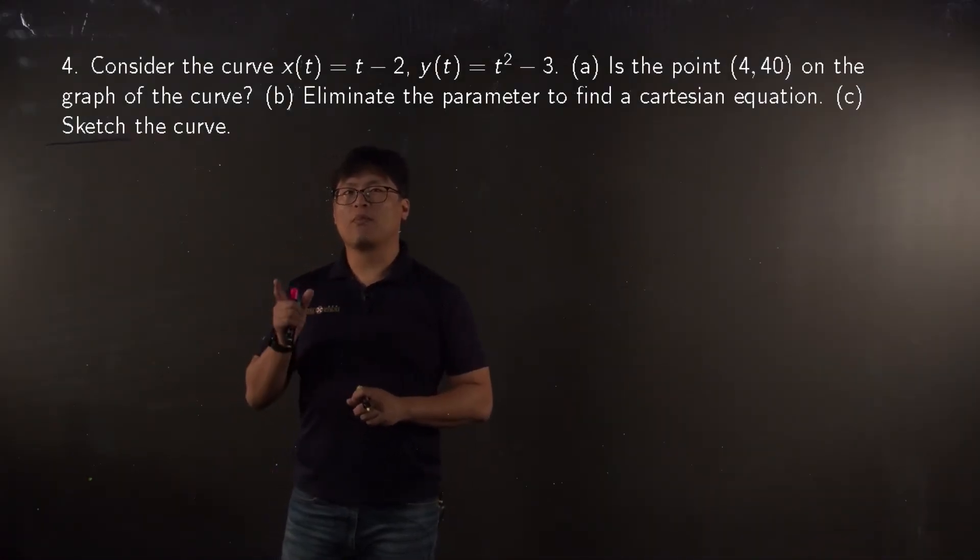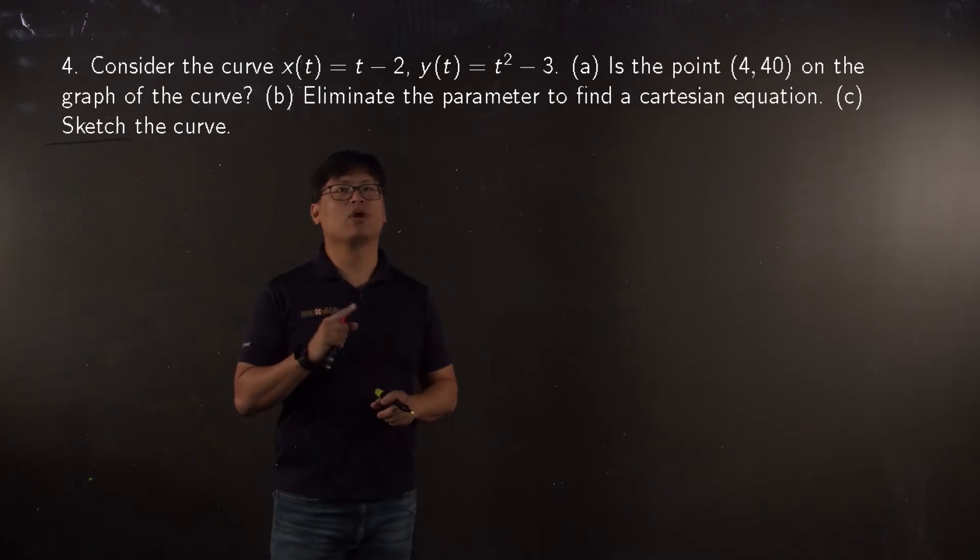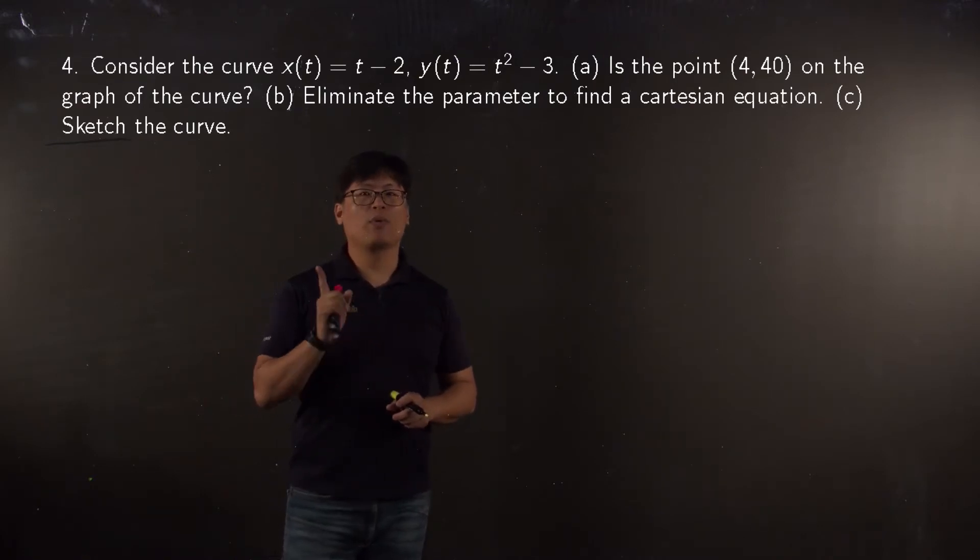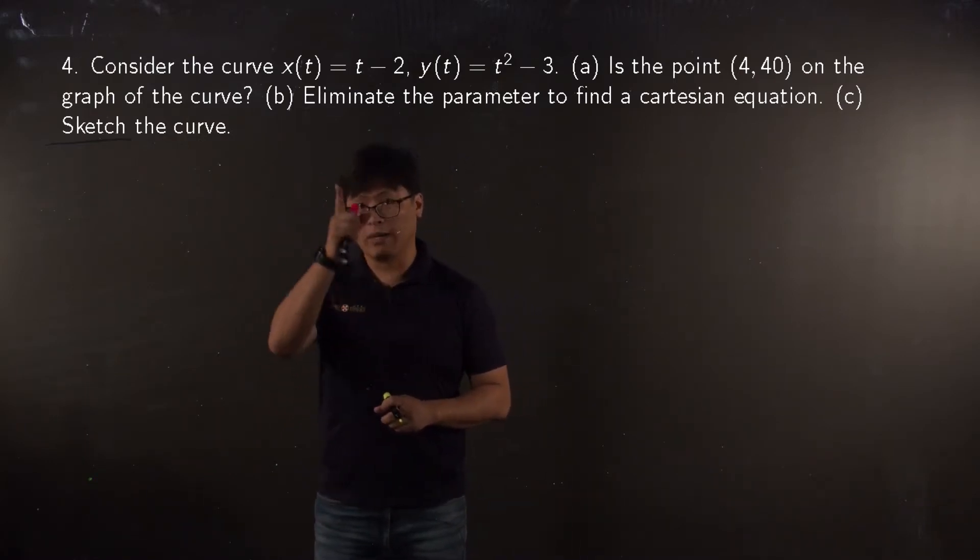Okay, let's talk about the parametric equation. Given parameter equation is x(t) = t - 2 and y(t) = t² - 3, with parameter t we will decide the position of your point, the x component and y component by calculation. So first of all, first part.